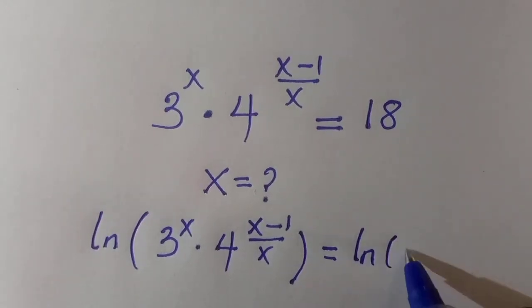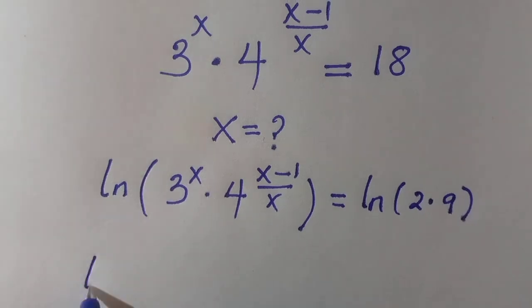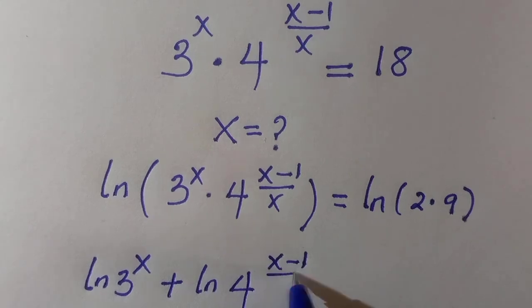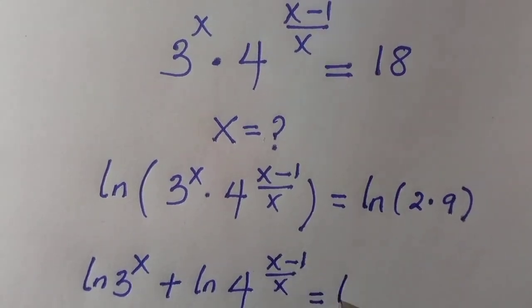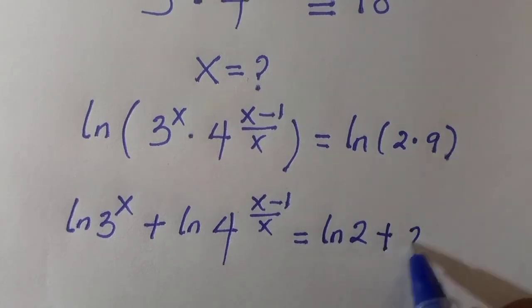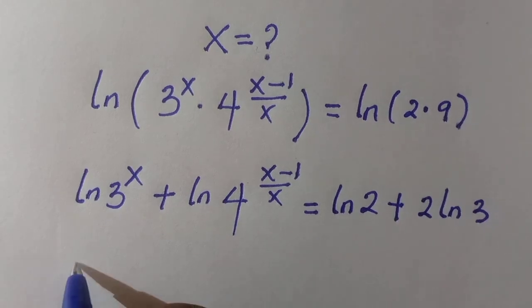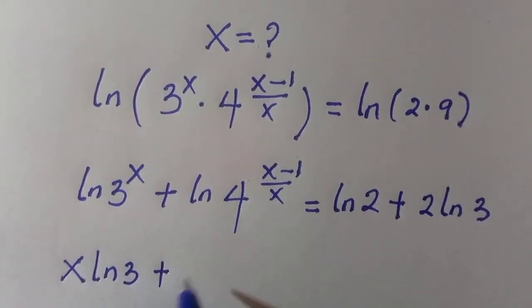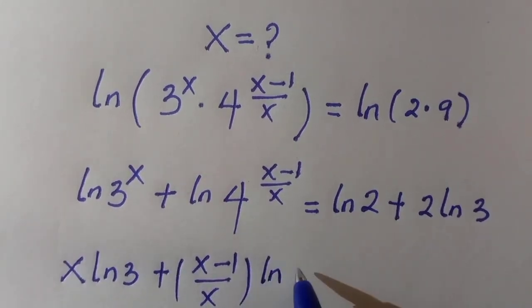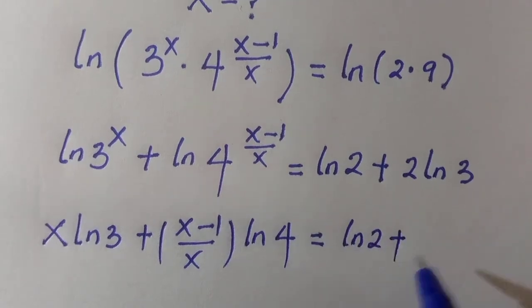We break 18 into 2 multiplied by 9. Here we apply the product rule of logarithm, which gives us ln 3 to the power x plus ln 4 to the power of (x minus 1) divided by x equals ln 2 plus 2 ln 3, because 9 can be written as 3 to the power of 2. Again, we have x ln 3 plus (x minus 1)/x in brackets times ln 4 equals ln 2 plus 2 ln 3.